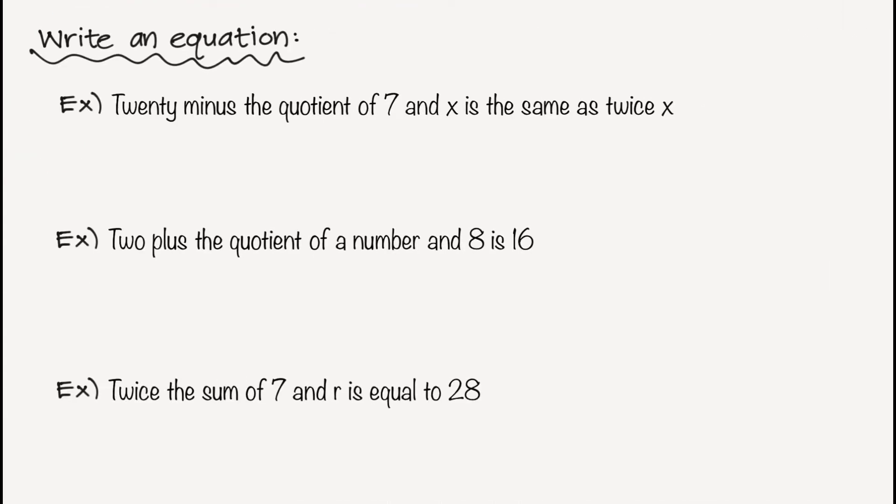So now I have three sentences and we're going to translate each one into an equation. In our first example, I'm going to highlight the words 20 minus, which are cluing me in to the number 20 and then a minus sign. Next, I'm going to highlight the quotient of 7 and x, which is going to tell me I'm going to have 7 divided by x, and I'm going to write it as a fraction. And then I see the keyword is, the same as, so that is going to be my equal sign.